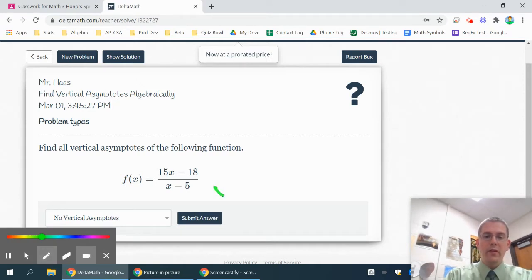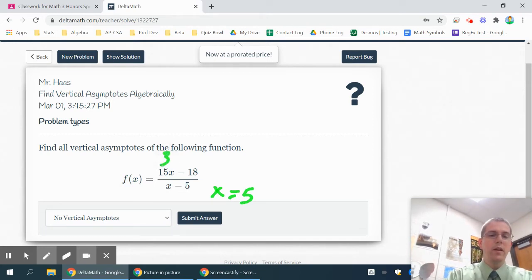It looks on this one like you might have a problem at x equals 5 because the value of 5 would make it be 0. To double check, see if there's anything you can factor out of the numerator. You could take out a 3, but that's going to leave you with a 5x minus 6.